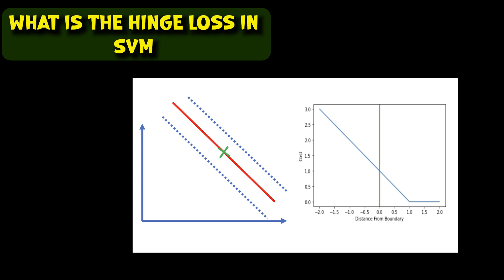The hinge loss increases linearly. In SVM, the goal is to find the optimal hyperplane that separates the positive and negative examples in the data. The hinge loss measures the error associated with the distance between the predicted output and the actual output for each training example.